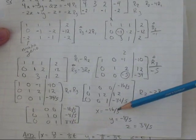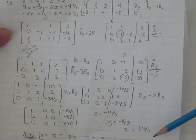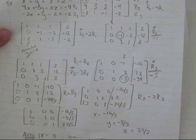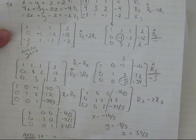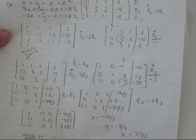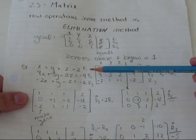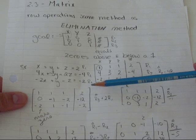When you have x equals a number, y equals a number, and z equals a number, that's what's called a unique solution. That represents, if you had a graph, only one point satisfies all three of these equations at the same time.